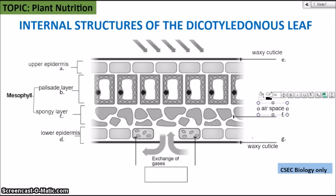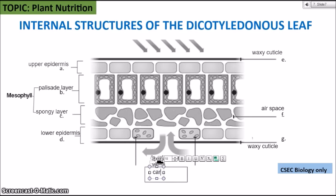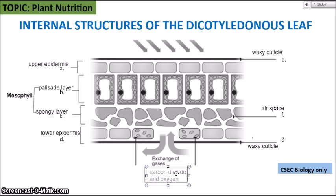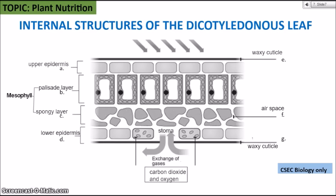F is pointing at the air spaces between the cells of the spongy layer. These are important for gaseous exchange and diffusion of gases within the leaf — specifically carbon dioxide and oxygen. Plants need carbon dioxide for photosynthesis and produce oxygen as a byproduct. Those gases enter and exit through the stomata — singular stoma — which are the small openings in the epidermis layers of the leaf. That is it for the dicotyledonous leaf.